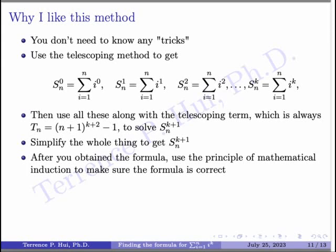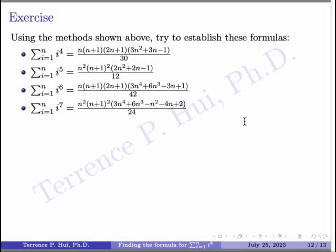As an exercise, if you have time, try out sum of i to the 4th and sum of i to the 5th, and see if you get the right formula. This method works. I like it because there's no trick — it's a systematic approach. There is a lot of algebra, so maybe that's a downside. But if you're willing to put in the work and push through the algebra, it's a nice way of getting yourself an answer. Thank you for watching.